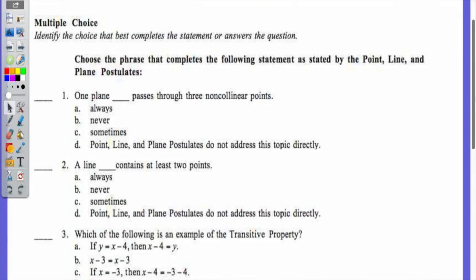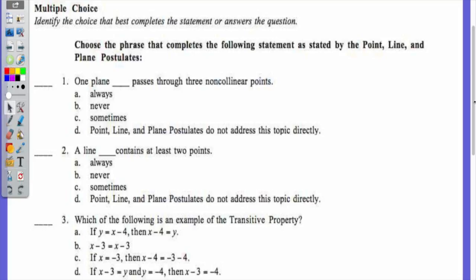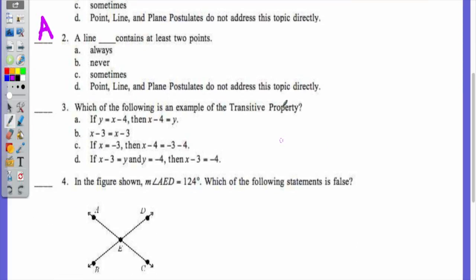To review, question number one: One plane blank passes through three non-collinear points. Is this always, sometimes, or never true? It's A, always. We even had a postulate about that. A plane always passes through three non-collinear points. A line blank contains at least two points. Always. A line always contains at least two points, because one point is not a line.